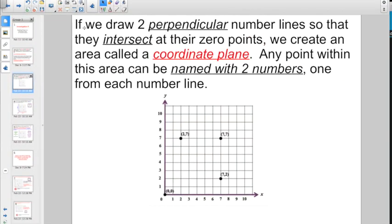So to kick it off right now, we find out that if we draw two perpendicular number lines so they intersect at their zero points, we create an area that's called a coordinate plane. Any point within this area can be named with two numbers, one from each number line.